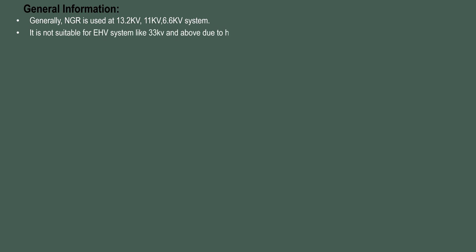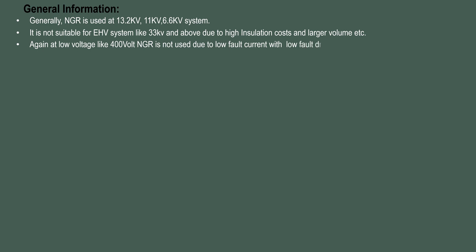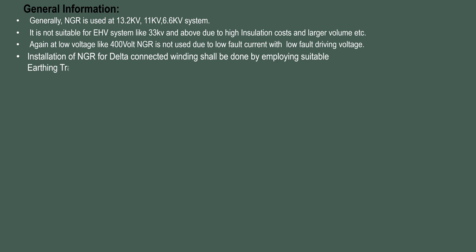General Information: NGR is generally used at 13.2 kV, 11 kV, and 6.6 kV systems. It is not suitable for EHV systems like 33 kV and above, due to high insulation cost and larger volume. At low voltage like 400 V, NGR is not used due to low fault current with low fault driving voltage. Installation of NGR for delta-connected windings shall be done through an earthing transformer, by which a neutral point is created.